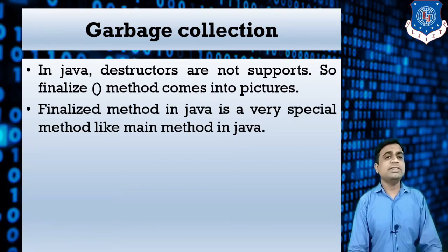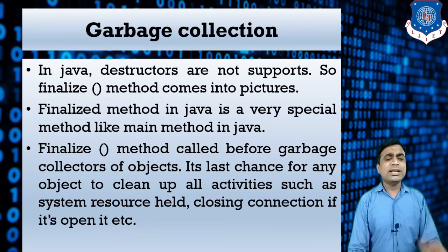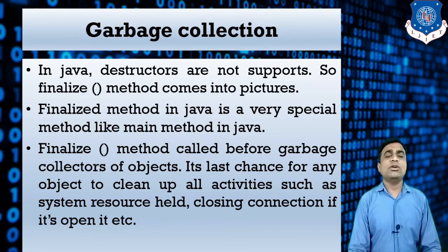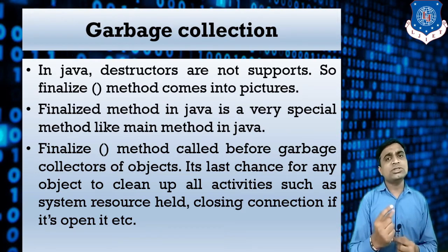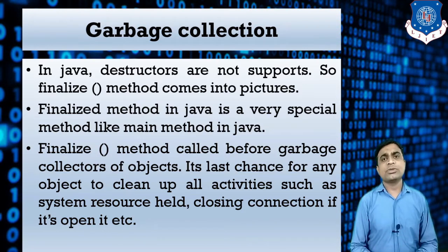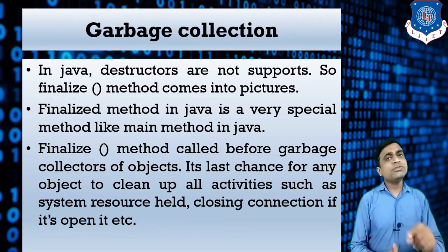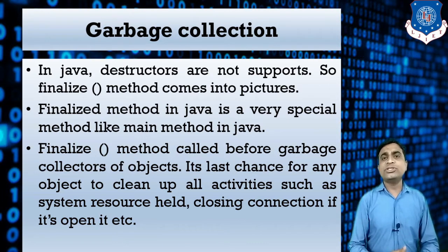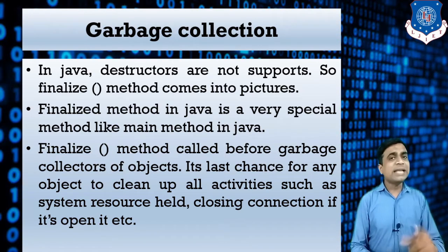An important exam question is: is there any destructor-type feature available in Java? The answer is yes — the feature is available, but we use a method called the finalize() method. The finalize() method is called before the garbage collector collects the object. If you want to use a particular object just one single time, and after that use you want to discard it, you use the finalize() method. After the finalize() method completes, the object is automatically removed.